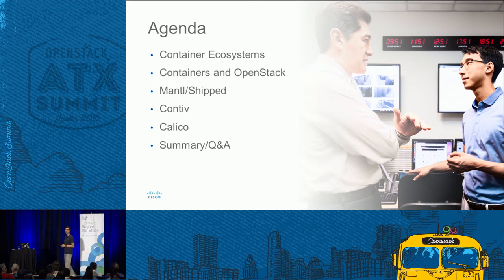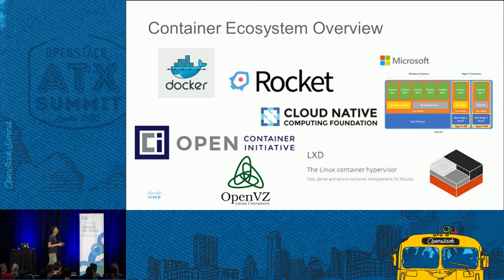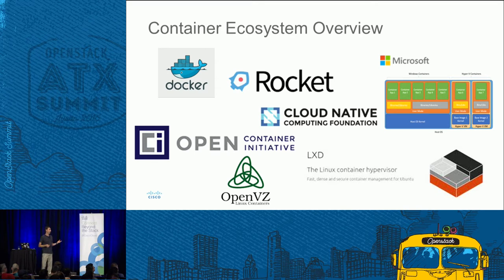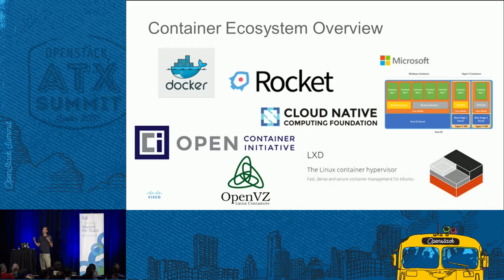Containers have been around for a long time — actually since Unix in the 70s with namespaces and control groups. But it wasn't until Docker really made containers a household name. They defined a container image format and created a hub repository. Rocket, part of CoreOS, has nice security enhancements. Ubuntu has good container support with Nova and LXD — the hypervisor for container management. OpenVZ has been around a while with good container and storage integration.